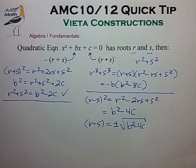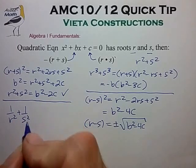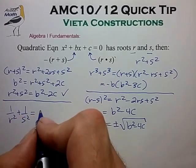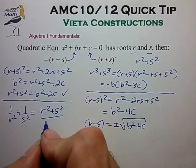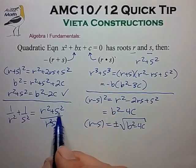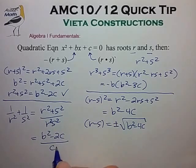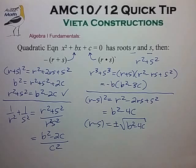One last example is to compute the sum of the reciprocal squares: 1 over r squared plus 1 over s squared. We can simply add these fractions and find this equal to r squared plus s squared, divided by rs squared. Substituting rs for c and using r squared plus s squared from the result above, we quickly find that this equals b squared minus 2c, over c squared. These were simple derivations and results that you don't need to remember, but do remember that these quantities are easily accessible if needed. Check out the description section of this video for example AMC problems involving these results. Good luck and see you at the next video!